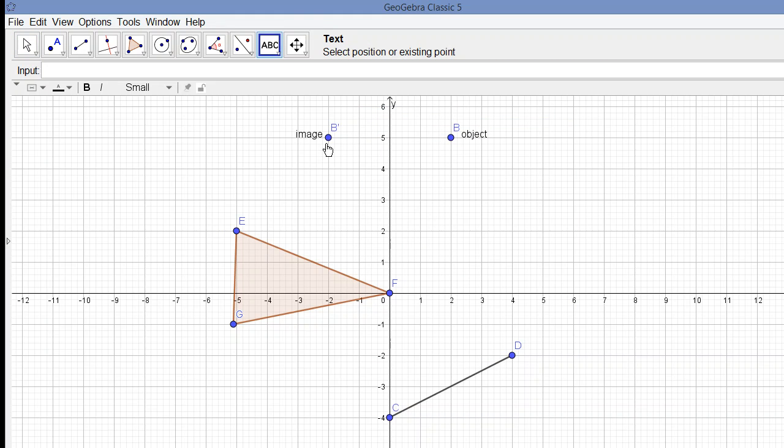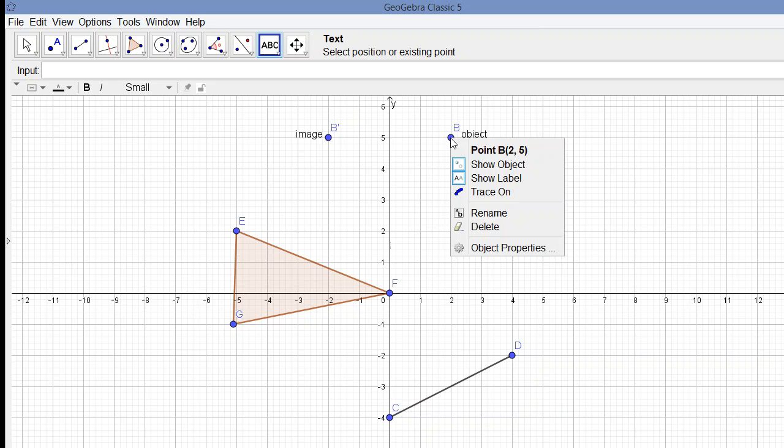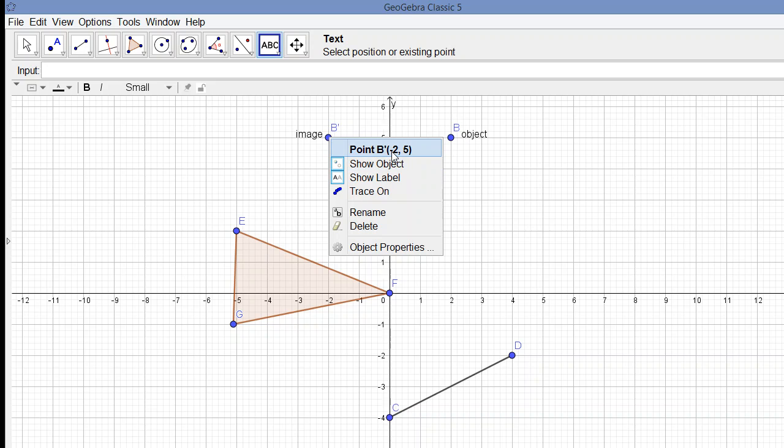Observe that the image is the same distance away from the y-axis as the object. The coordinates of point B are (2,5), and B prime has coordinates (-2,5). We see that the x-coordinate changes its sign in a reflection.